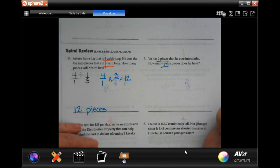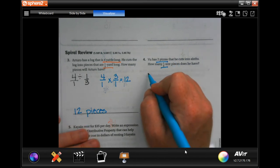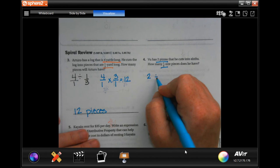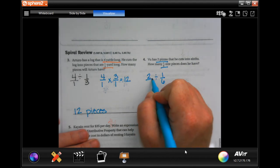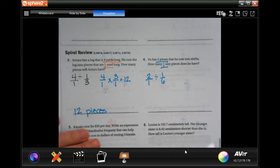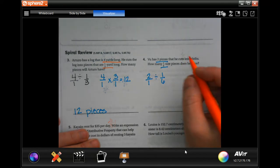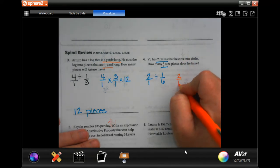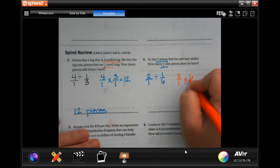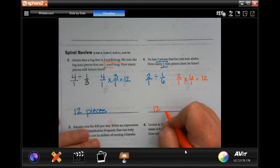He has two pieces that he cuts into sixths. How many one-sixth size pieces does he have? So he has two pieces, he is dividing them, cutting them into one-sixth pieces. Two is not a fraction, I will put it over one. I'm going to keep, change, and flip. Two times six is twelve. Twelve pieces again.